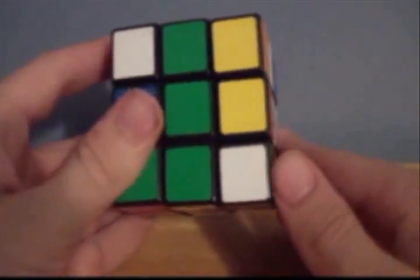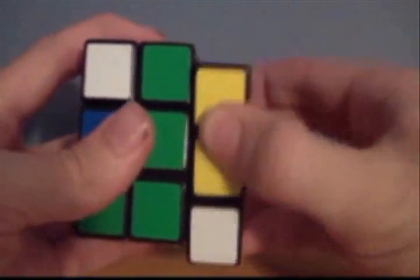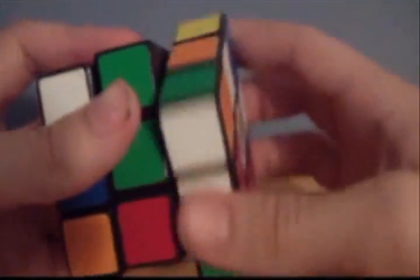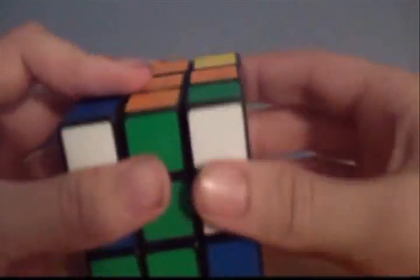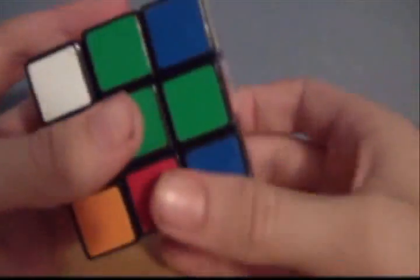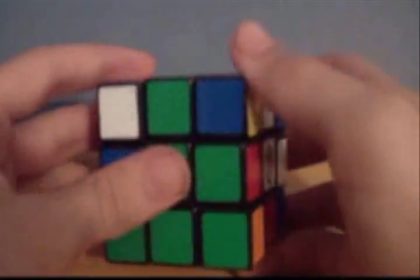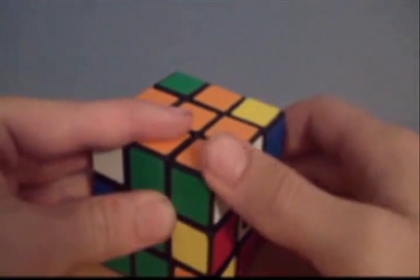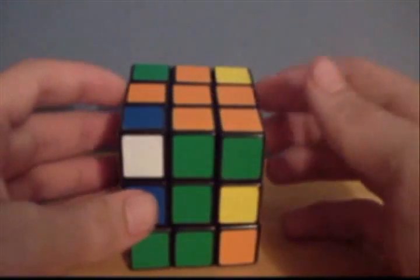Here we have the white and green corner. We're just going to bring that right there, and now we're going to do the first thing I showed you before, which is right inverted, bottom inverted, right, bottom. Right inverted, bottom inverted, right, bottom. And you just do that until this is up there. And there you go. If you didn't catch that, check it again.